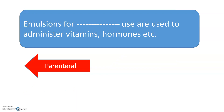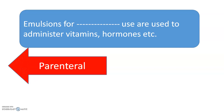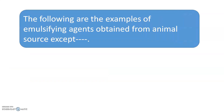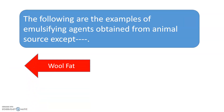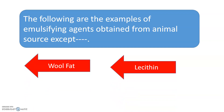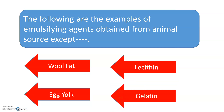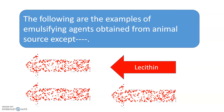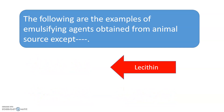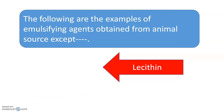The following are examples of emulsifying agents obtained from animal sources, except: wool fat, lecithin, egg yolk, or gelatin. The correct answer is lecithin — all other options are examples of animal-sourced emulsifying agents except lecithin.